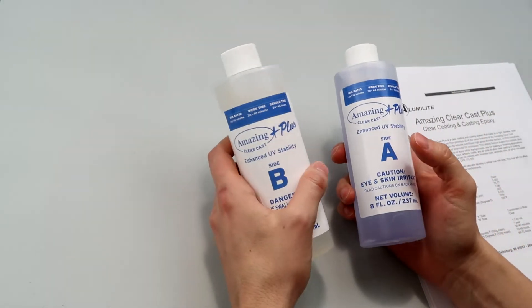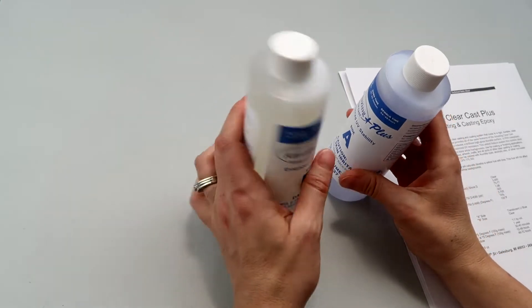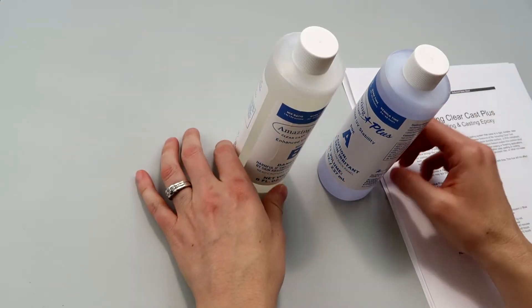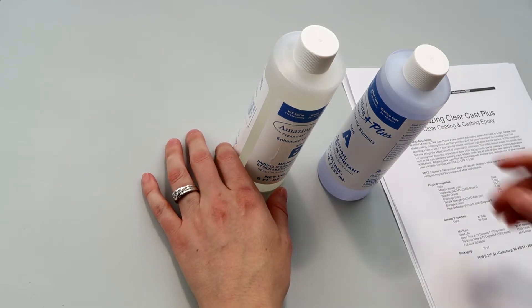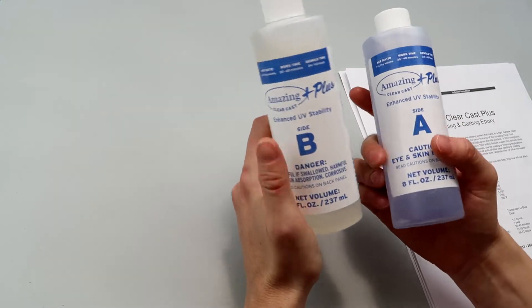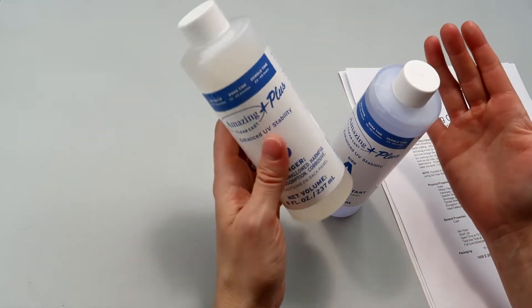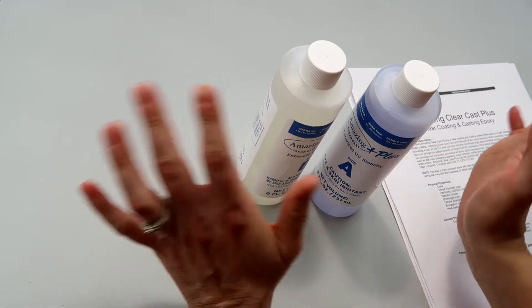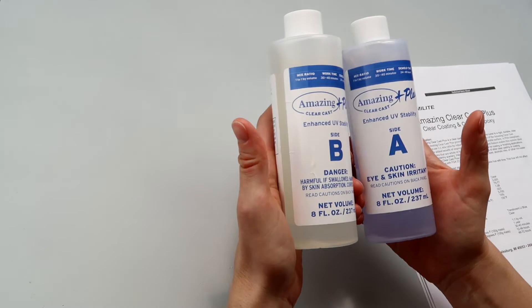I got this online at the Alumilite website and it was $25, but I have seen now that they have it in Michaels and Hobby Lobby. The prices are very different though. It was $36 for this 16 ounce kit at Michaels and then it was $20 for the kit at Hobby Lobby. I don't know what's up with that, but that's what's going on.